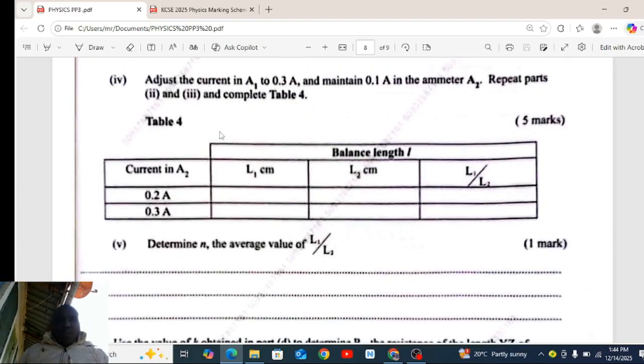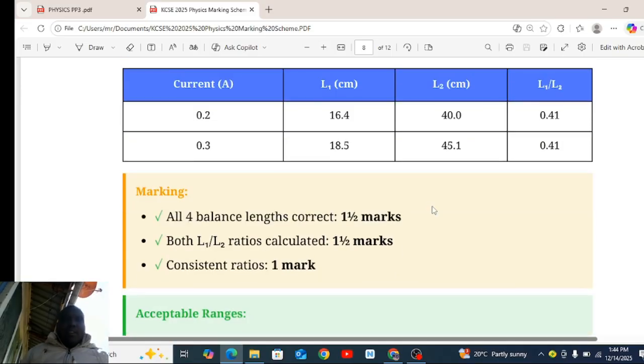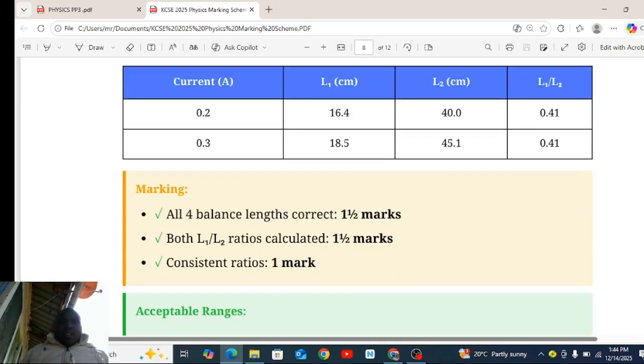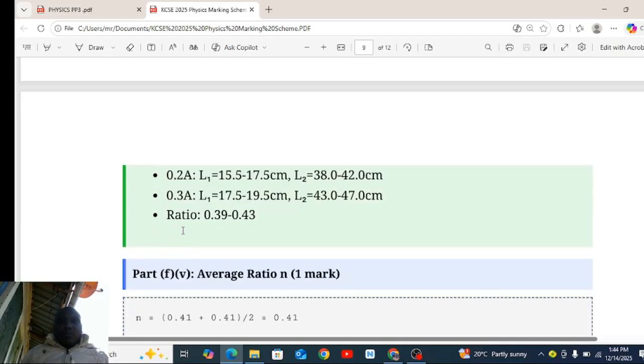Table 4, 0.2 ampere, L1, L2, L1 over L2. And L1, L2, L1 over L2. These are the values, correct values. You can as well score if you are between these ranges.